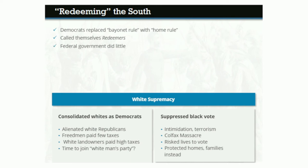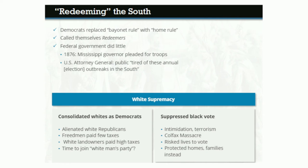The federal government did little to interfere with this process. In 1876, as Mississippi's elections neared and black voter intimidation was rampant, the state's governor pleaded to Washington for federal troops. The U.S. Attorney General responded that the public were tired of these annual election outbreaks in the South. One by one, Redeemers won back state governments for the Democrats, and by 1877, every state of the former Confederacy had a Democratic government, just as before the Civil War.